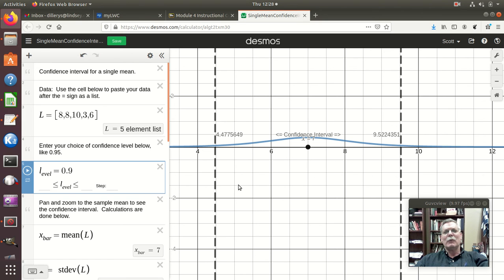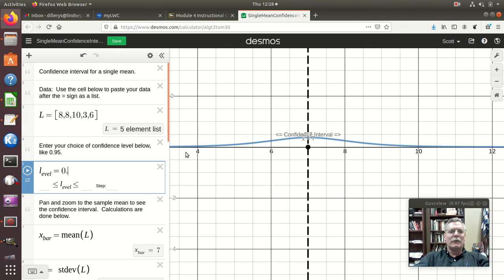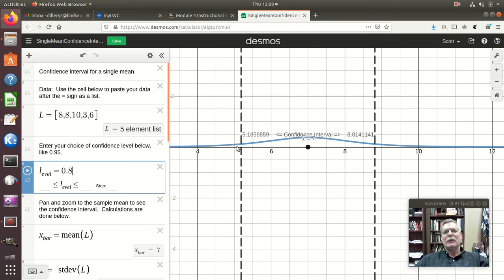If I go down to like an 80%, you see it gets much narrower. So the more confident I want to be, the bigger the interval I need. And so that is, there's not much to it. Using this to get a confidence interval, and I get a nice picture of it when I do it. And so we'll call that done for this video.